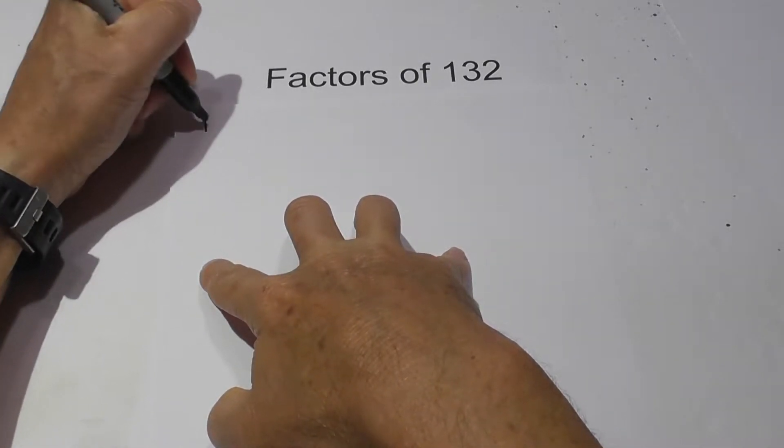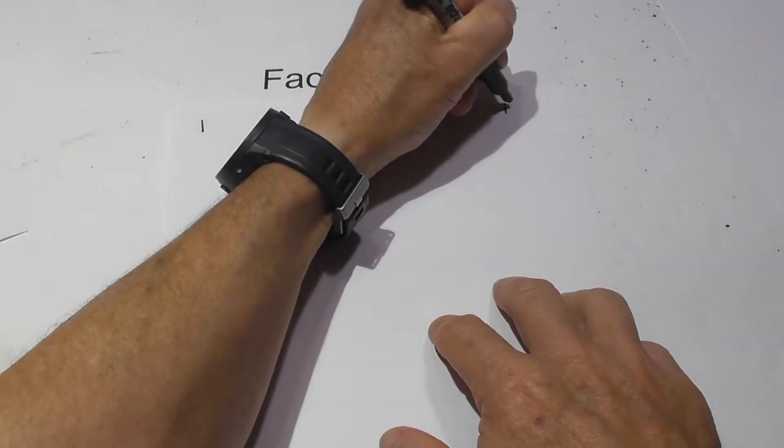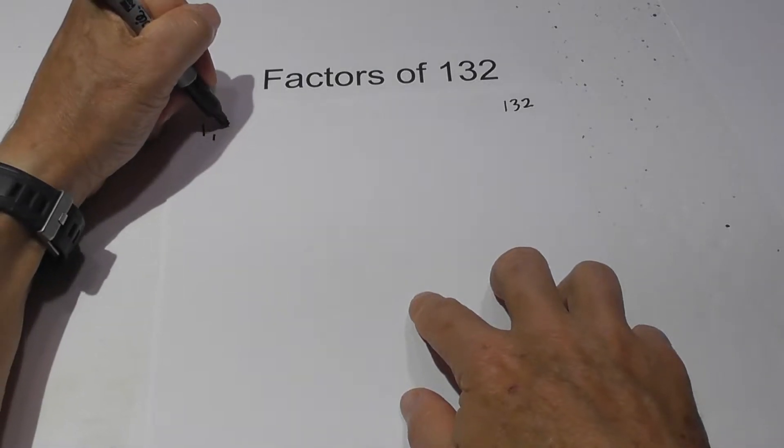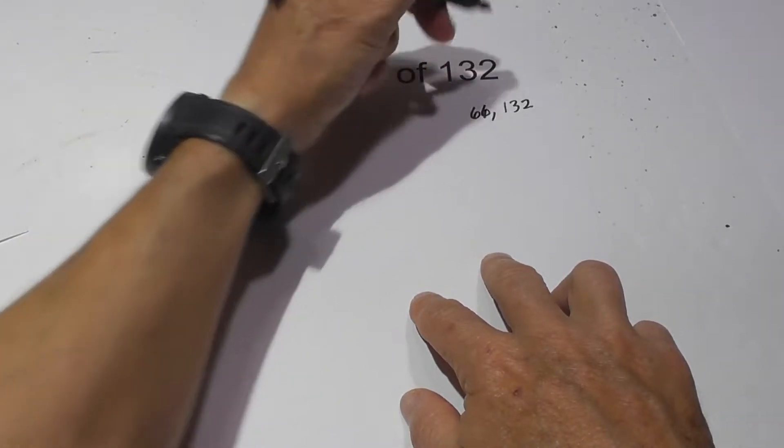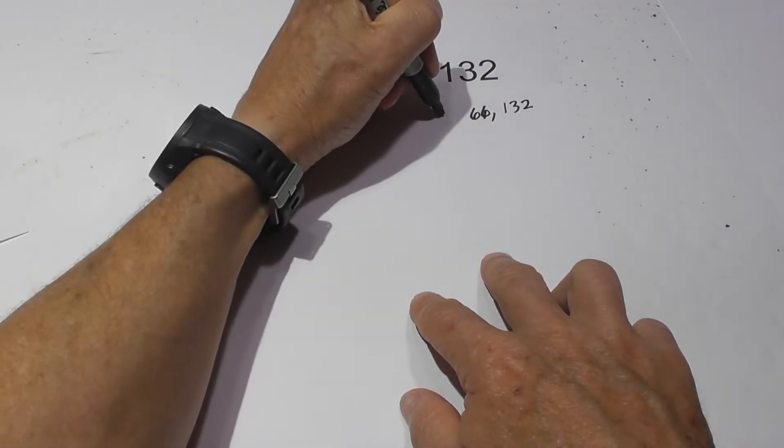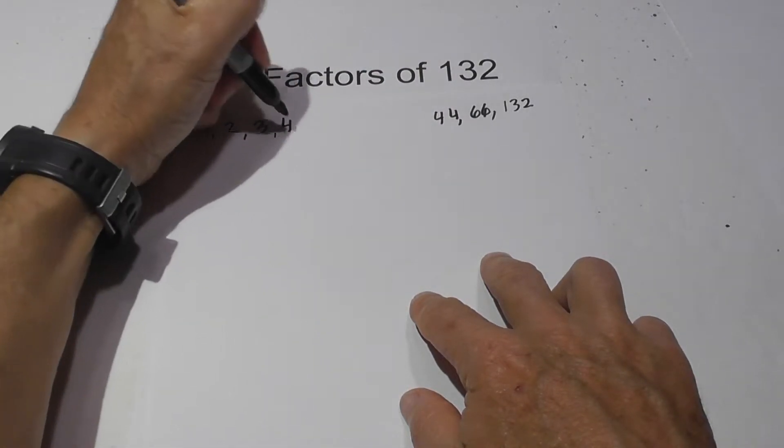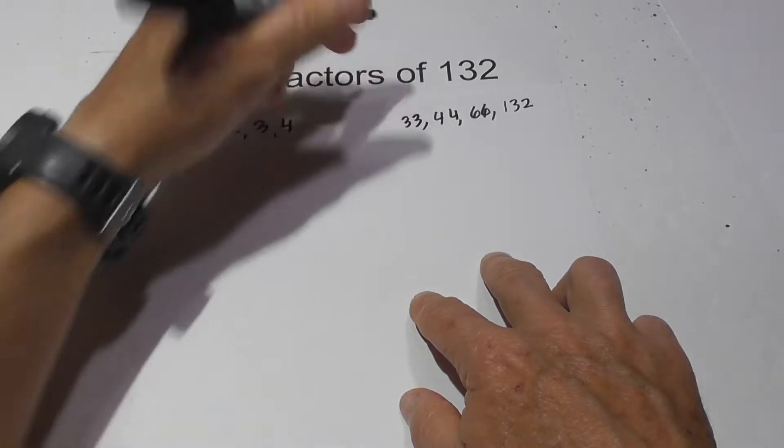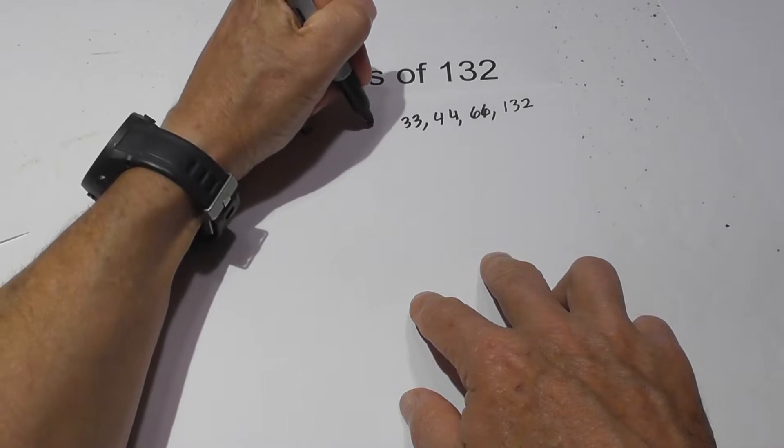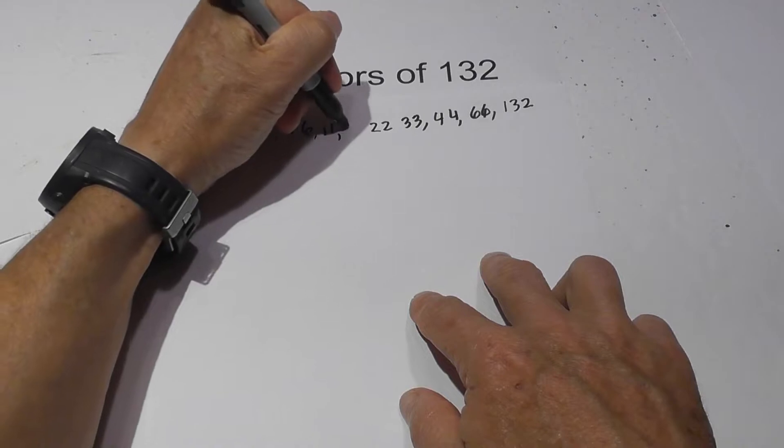So we will go 1 times 132. Next we have 2 and 66. After that we have 3 times 44. After that we have 4 and 33. Next, 6 and 22, and finally 11 and 12.